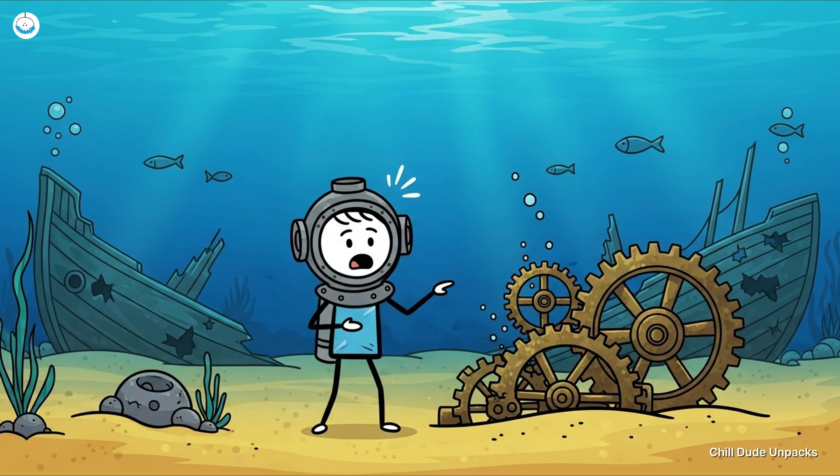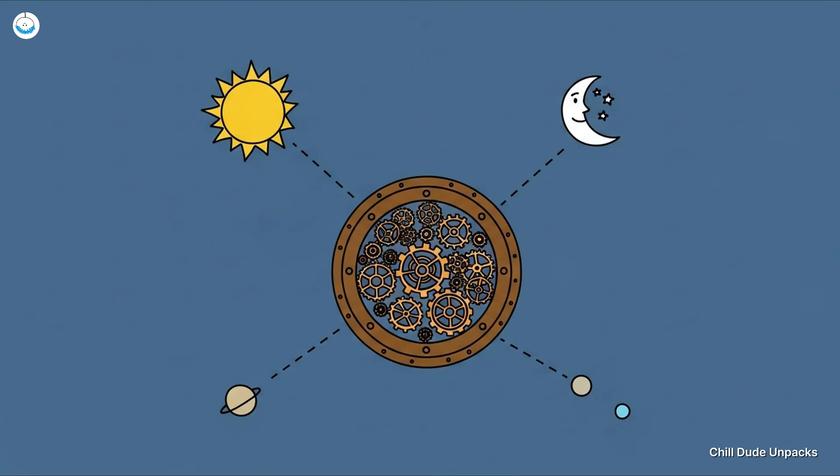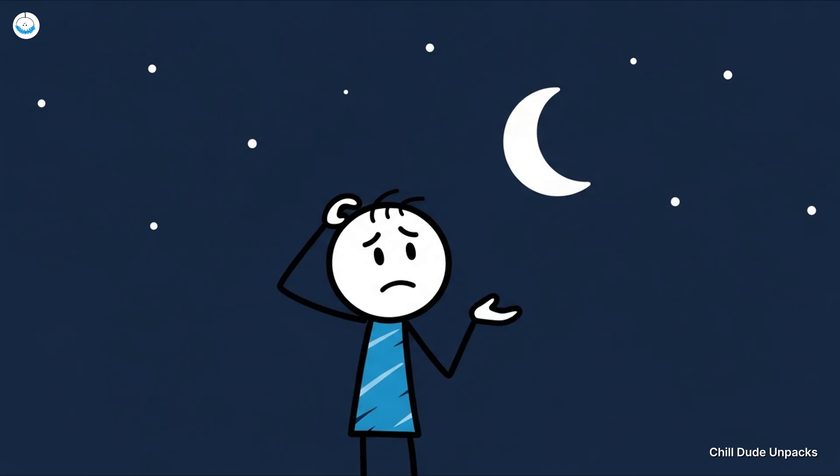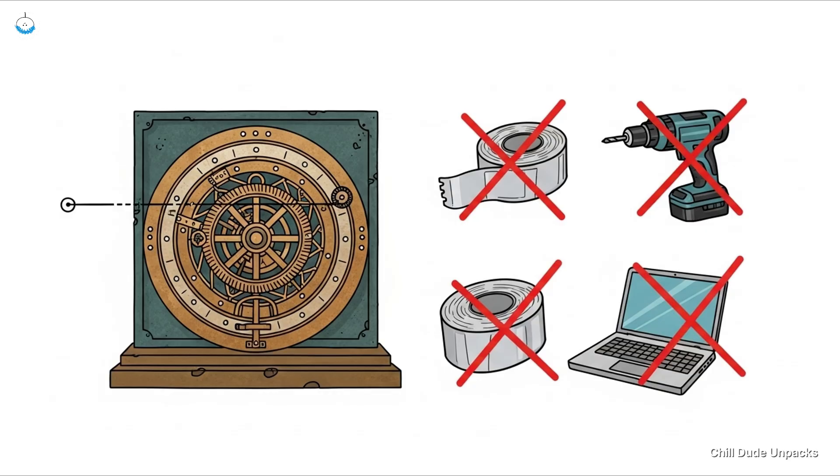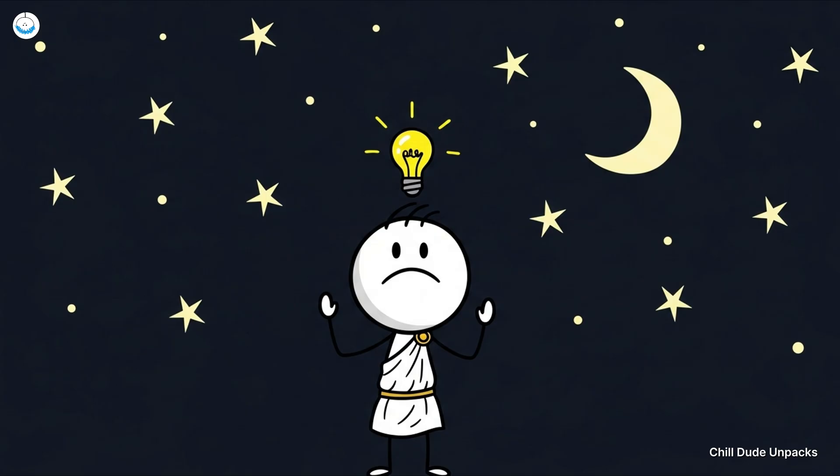Number three, the Antikythera Mechanism—the OG smartwatch. Imagine finding an ancient Greek gadget in a shipwreck that looks like it could sync to your iPhone. That's basically the Antikythera Mechanism. Built around 100 BCE, it's a complex system of bronze gears used to track the positions of the sun, moon, and planets and predict eclipses. It's not just 'oh, the moon will be up there somewhere' level of prediction. No, this thing had pinpoint accuracy, made without modern tools, computers, or even duct tape.